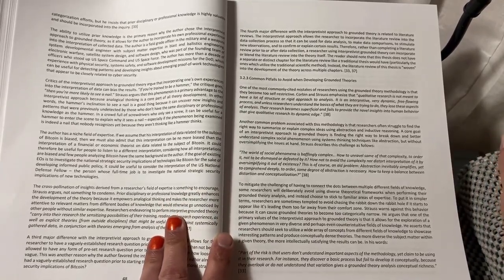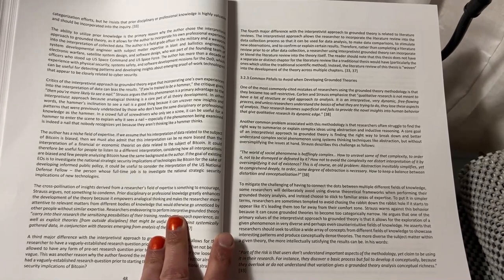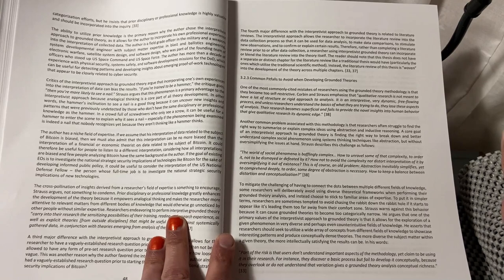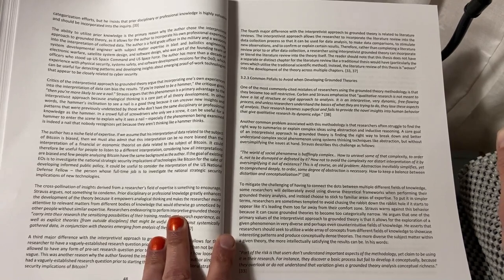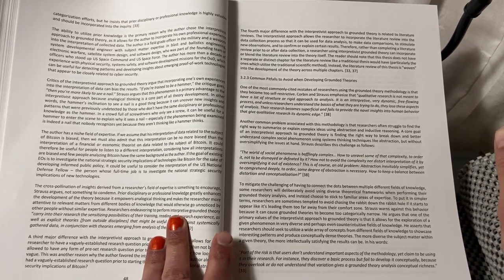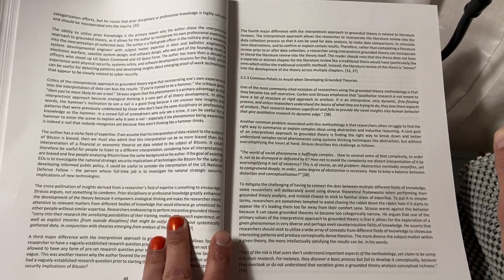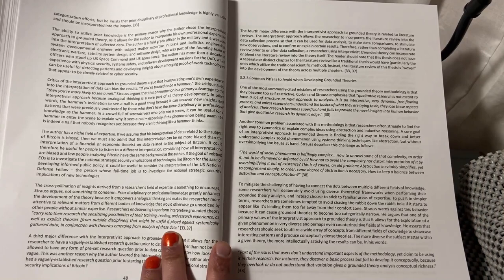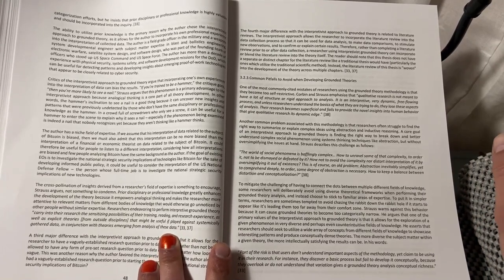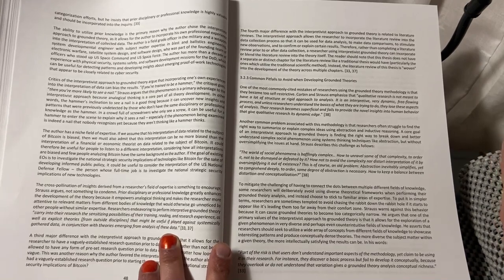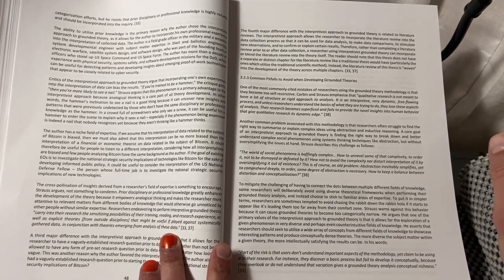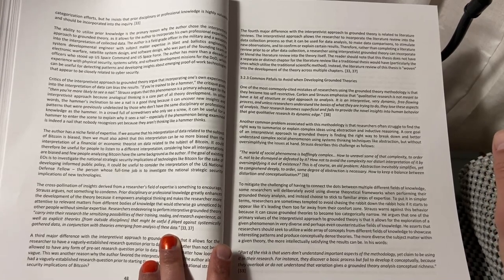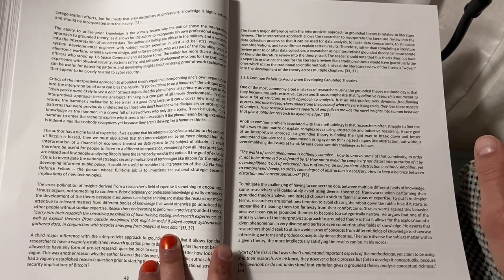Critics of the interpretivist approach to grounded theory argue that incorporating one's own experiences into the interpretation of data can bias the results. If you're trained to be a hammer, the critique goes, then you're more likely to see a nail. Strauss argues that this phenomenon is a primary advantage to the interpretivist approach because analogical thinking is a core part of theory development. In other words, the hammer's inclination to see a nail is a good thing because it can uncover new insights and patterns that were previously undetected by those who don't have the same disciplinary or professional knowledge as the hammer. In a crowd full of screwdrivers who only see a screw, it can be useful for a hammer to enter the scene to explain why it sees a nail, especially if the phenomenon being examined is indeed a nail that nobody recognizes yet because they aren't thinking like a hammer thinks.